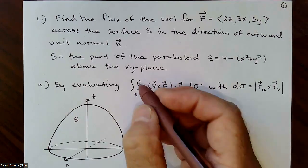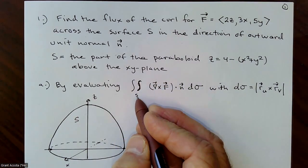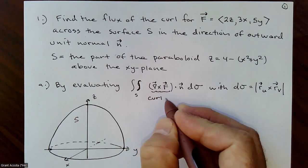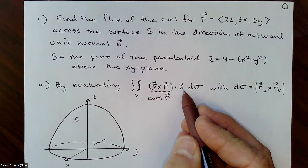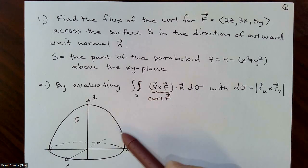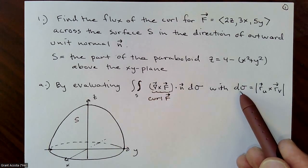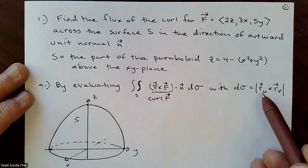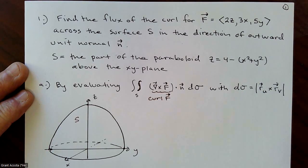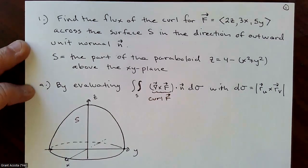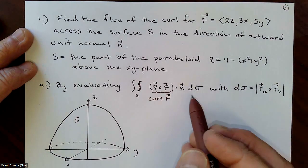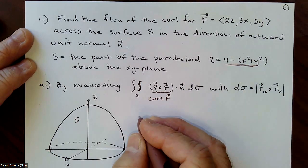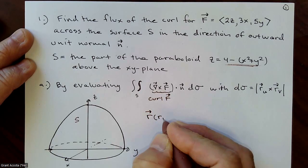Part one: we'll evaluate the standard way, the double integral — a surface integral of ∇ × F, also called the curl of F dotted with n dσ. For dσ, one option uses a parameterization where dσ is the magnitude of r_u × r_v. We're not going to use u and v here because polar coordinates are clearly the way to go, so we'll parameterize our surface in terms of r and θ.